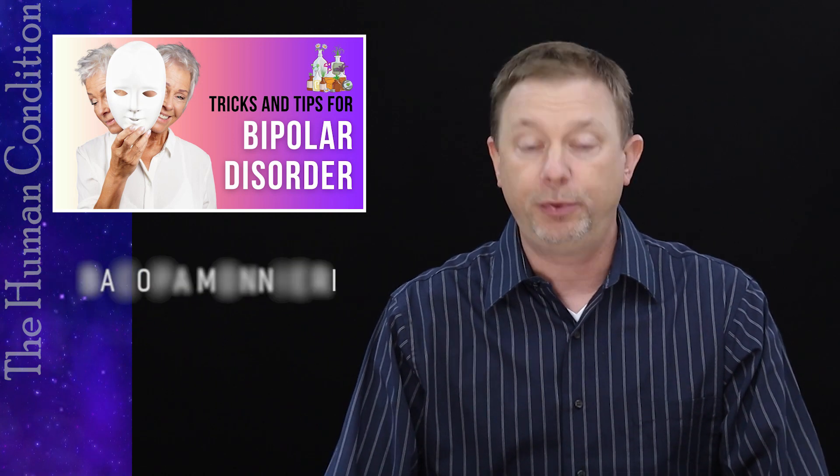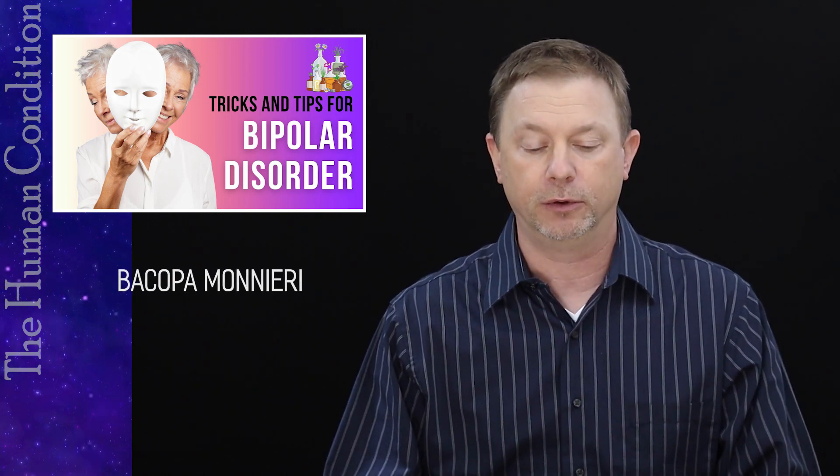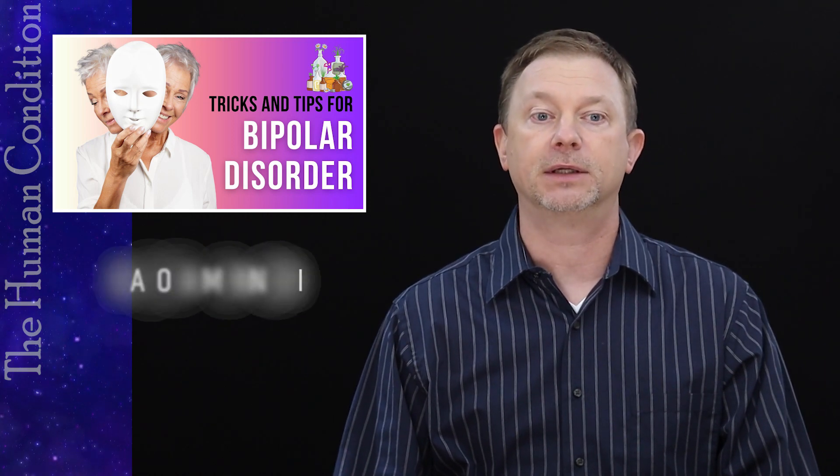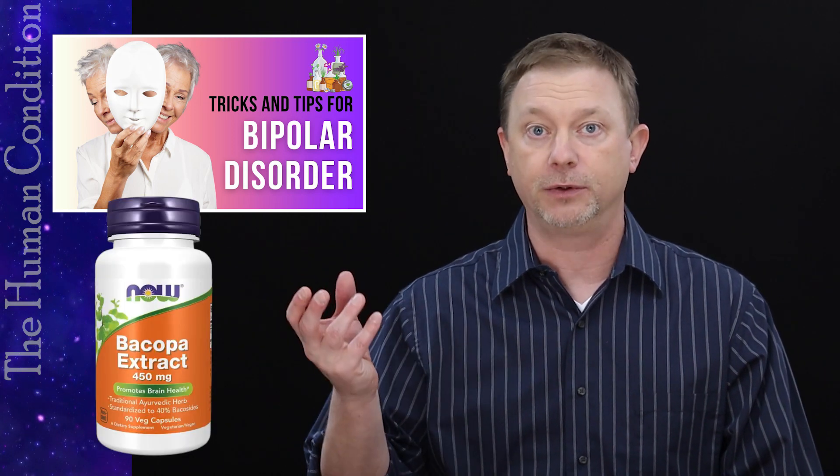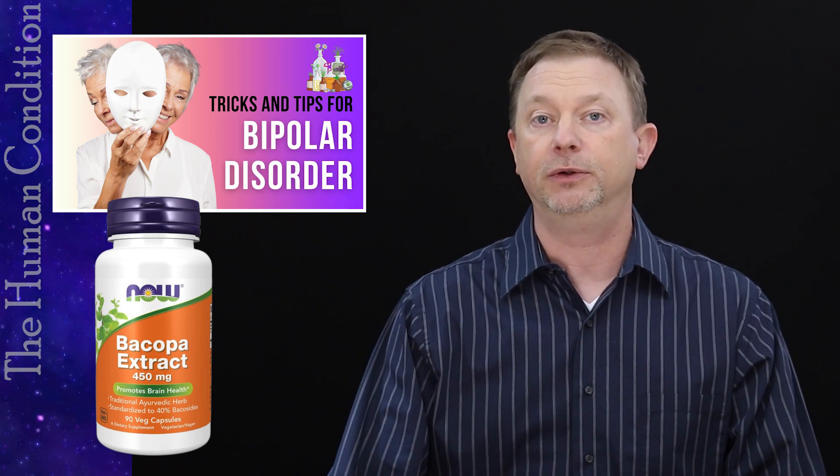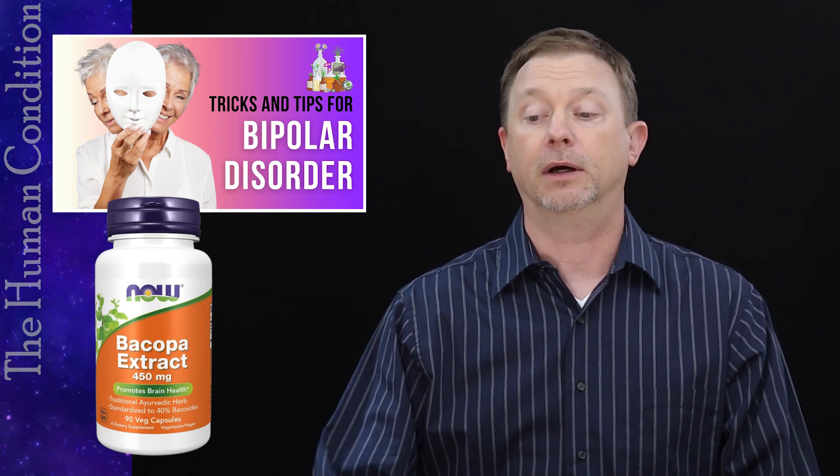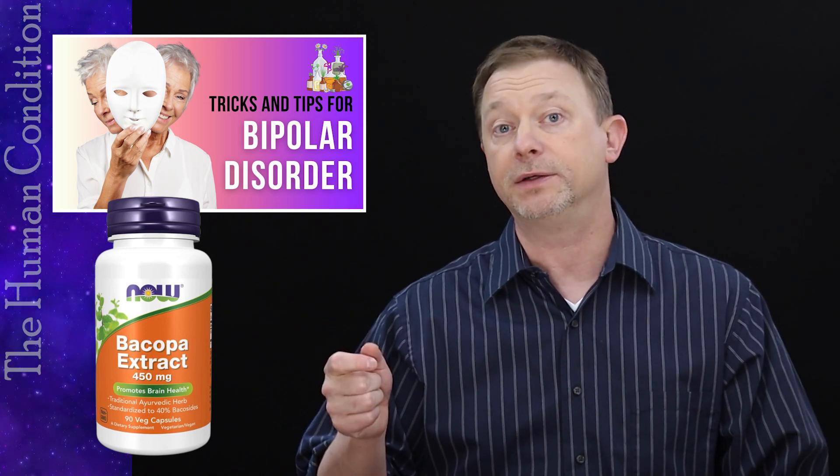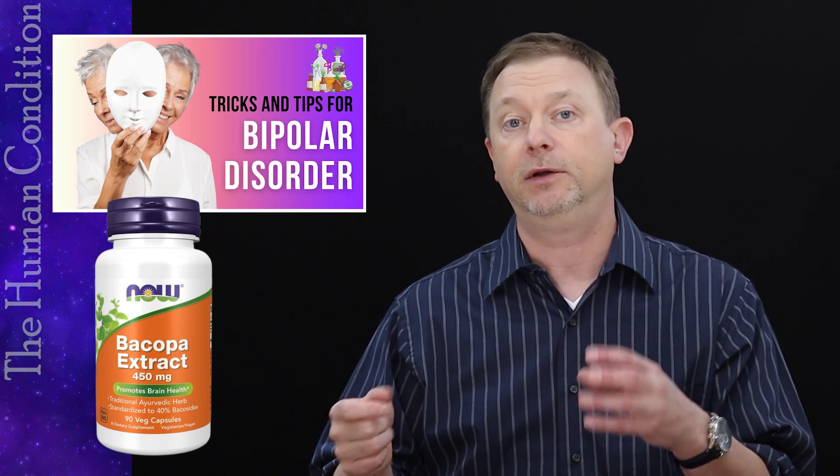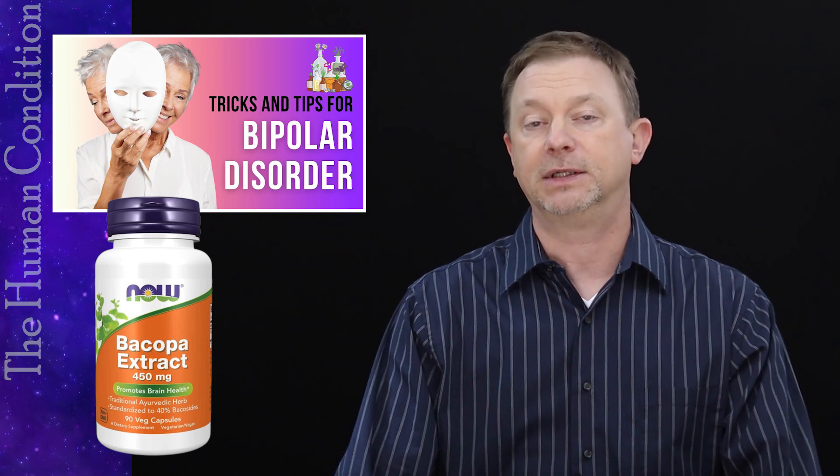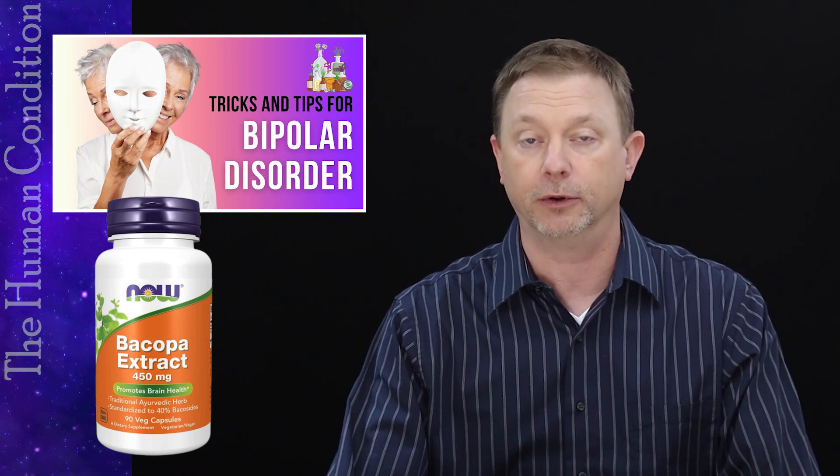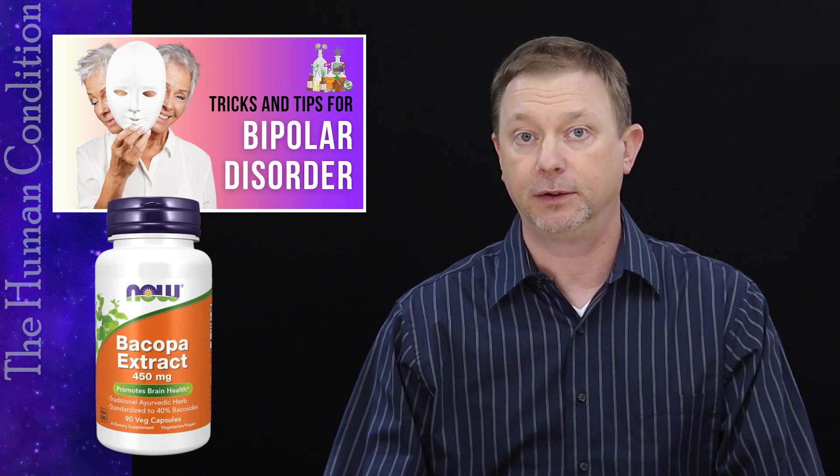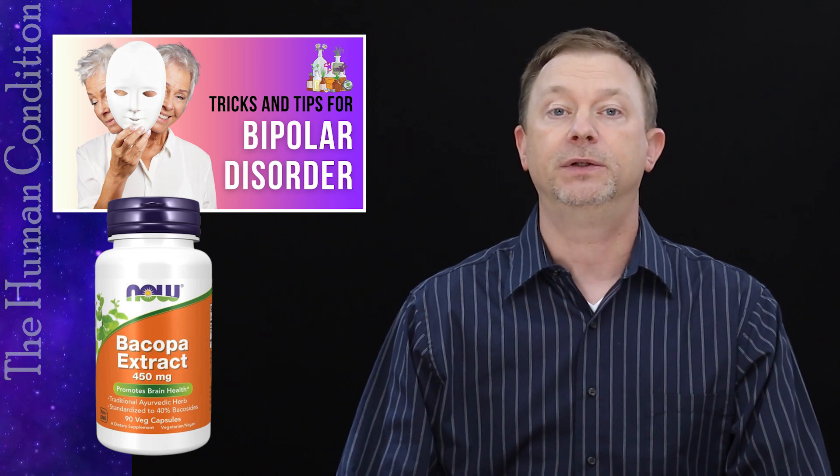We need to talk about Bacopa monnieri which is one of my favorite herbs. Bacopa monnieri is used as a tincture, it's also used as a powder you can have freeze dried in capsules. And Bacopa monnieri has been used to normalize the neurotransmitters dopamine, serotonin, and norepinephrine as well as the receptors for the sensitivity of those neurotransmitters. So I like Bacopa monnieri, it's very safe, it's available over the counter, it's a simple herb that can be used. And as always anything that you're doing when you're prescribed a drug you should be talking to your prescriber about that particular material.